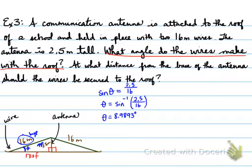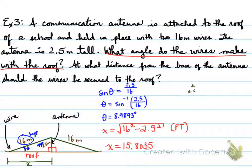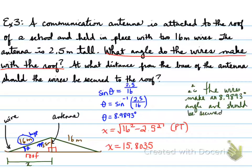Alright. Now, next is we need to answer how far should the wire be away from the antenna to be secured to the roof. We need to know this distance here. We measure it by taking x equals, well, if we look at the measurements, we have this measurement, we have this measurement, we could easily find this measurement by using Pythagorean theorem. Pythagorean theorem says that 16 squared equals 2.5 squared plus x squared. When you isolate for x, you get x equals square root of 16 squared minus 2.5 squared. And you end up with a value of 15.8035. So the wires make an 8.9893-degree angle and should be secured 15.8035 meters away from the antenna.